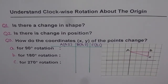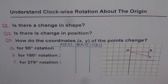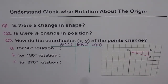Here is a test problem for you to understand clockwise rotation about the origin. We have three questions. Question one: is there a change in shape when you do clockwise rotation about the origin? Question two: is there a change in position? Question three: how do the coordinates x and y of the points change for 90 degrees, 180 degrees, and 270 degrees rotation? Please pause the video, answer the questions, and then look at my suggestions.